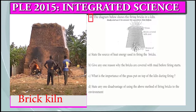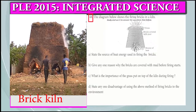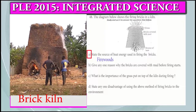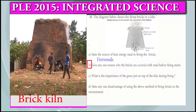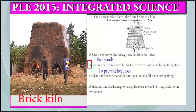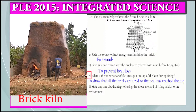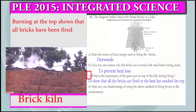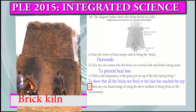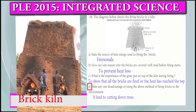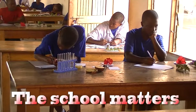Question 48: The diagram below shows firing bricks in a kiln. Part A: Name the source of heat used in firing bricks. That is firewood. Part B: Give a reason why bricks are covered with mud before firing starts. To prevent heat loss. Part C: What is the importance of the grass put on top of the kiln during firing? To show that all the bricks are fired and that heat has reached the top. Part D: State one disadvantage of using this method of firing bricks to the environment. It leads to cutting down trees, leading to deforestation.